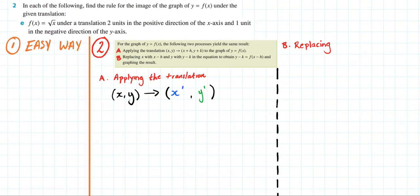We are doing exercise 7a and in this video I'll be answering question 2e which says in each of the following find the rule for the image of the graph of y equals f(x) under the given translation.